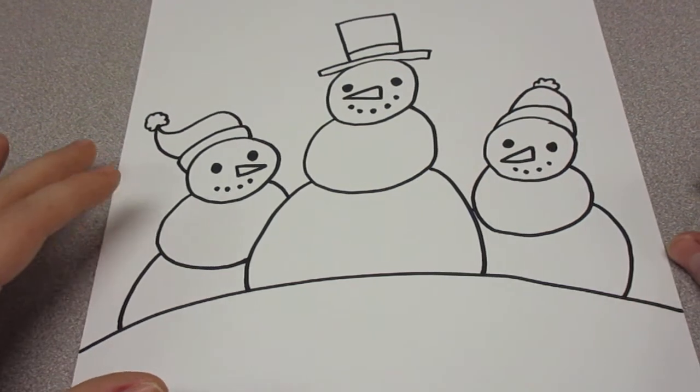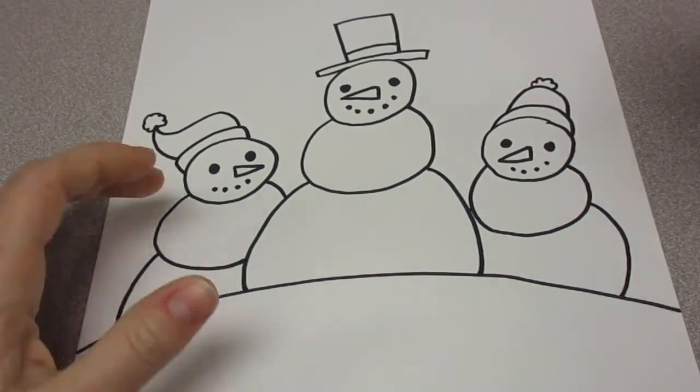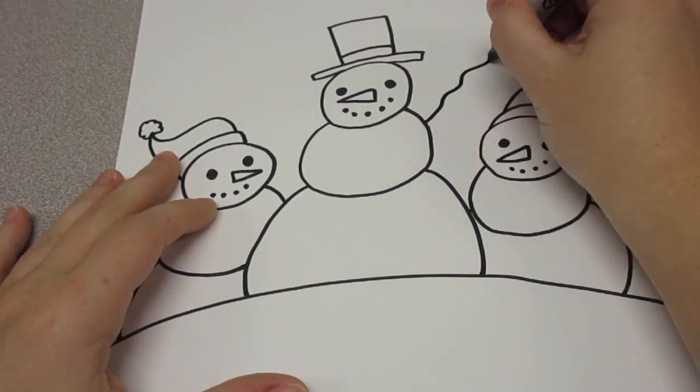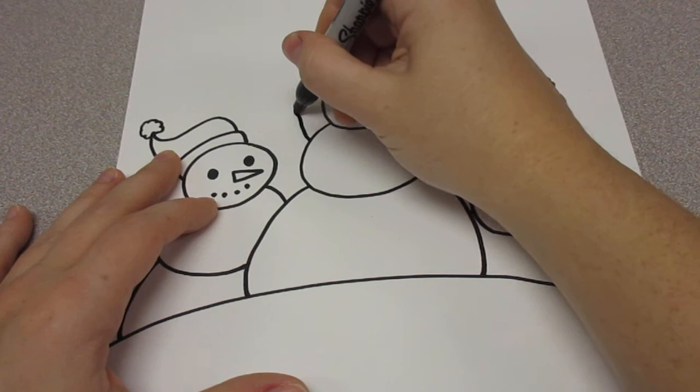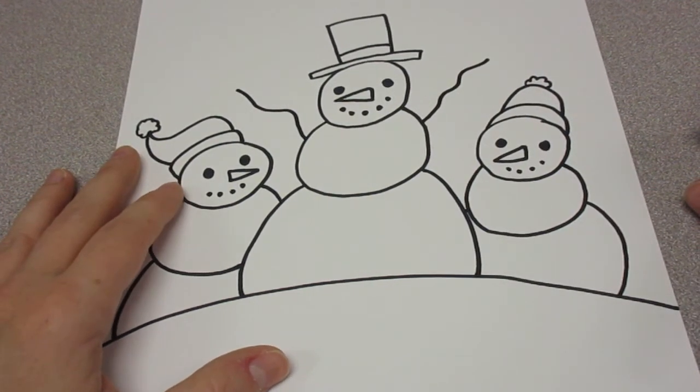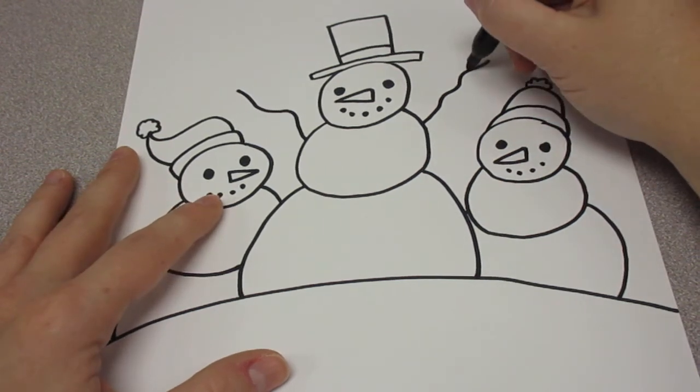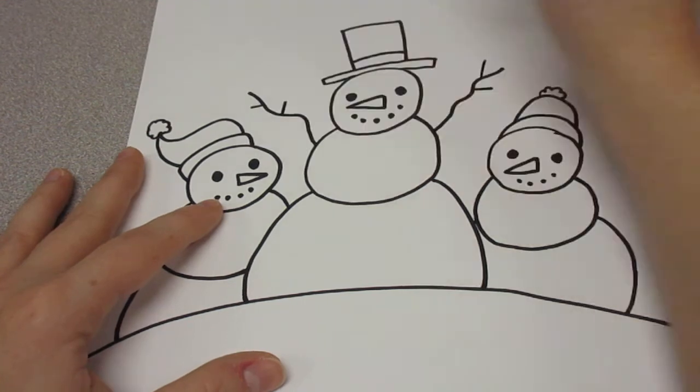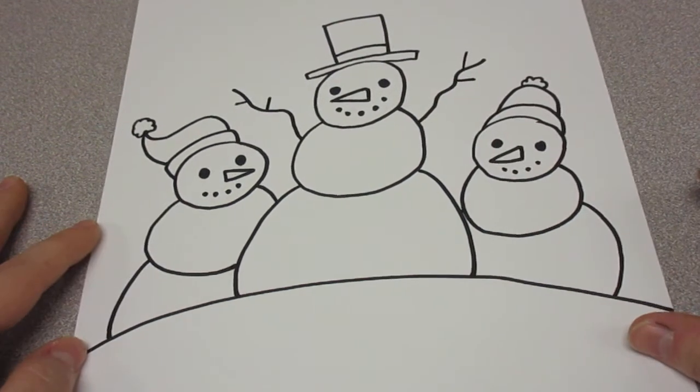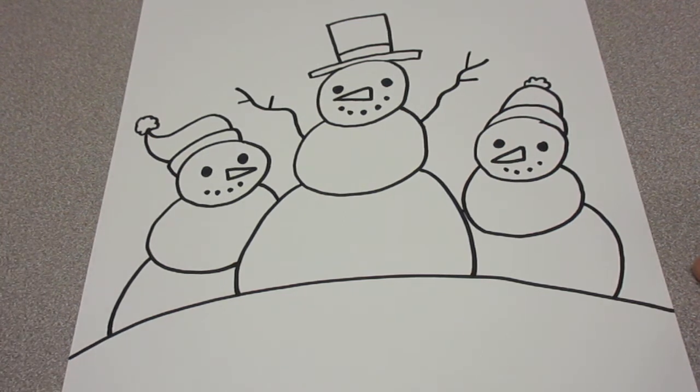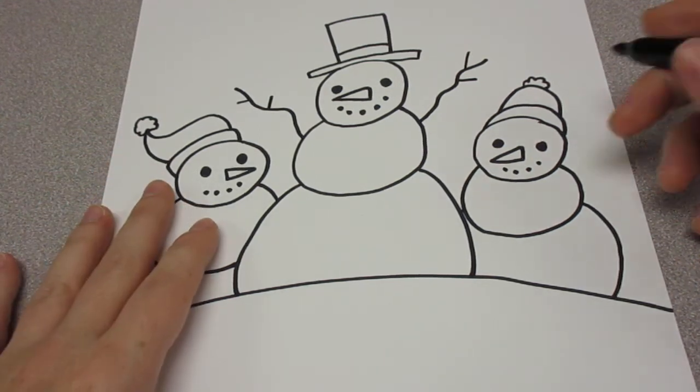Okay, these guys need some arms. And snowman's arms are made out of sticks. So we're going to draw a stick coming out of both sides, a little wiggly because it's a stick. And we can make a few twigs come off the stick.